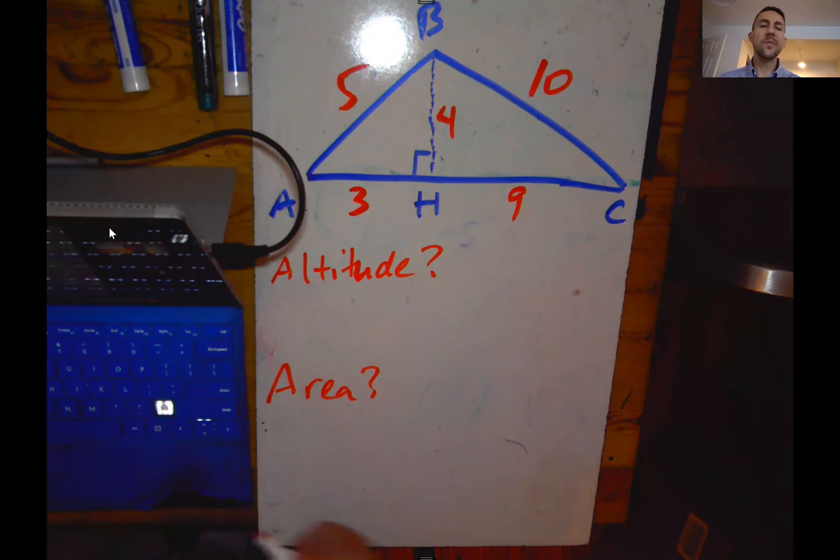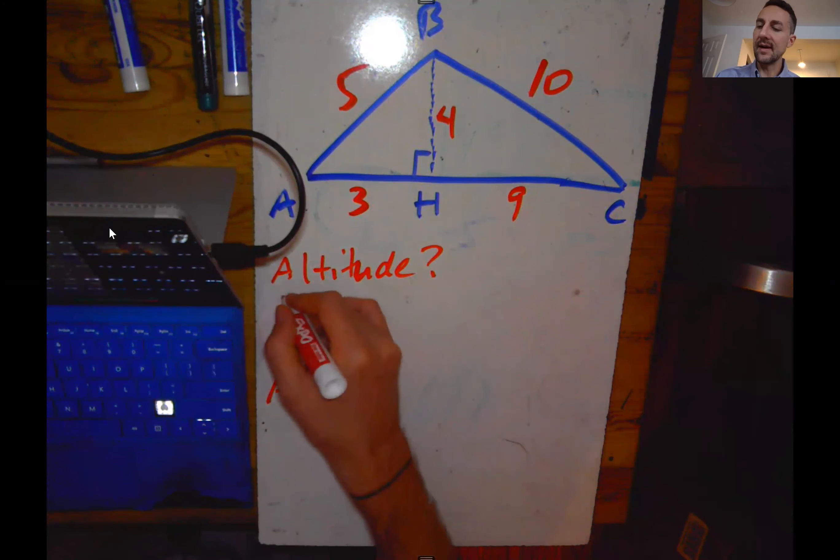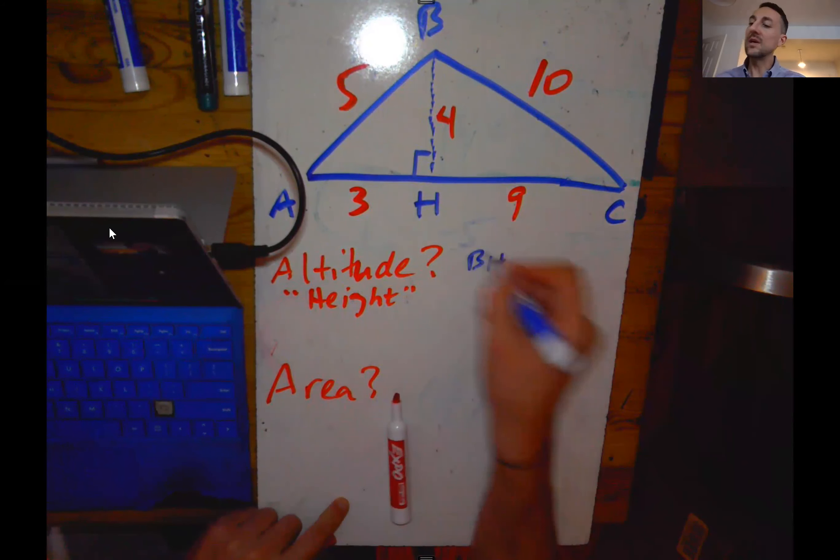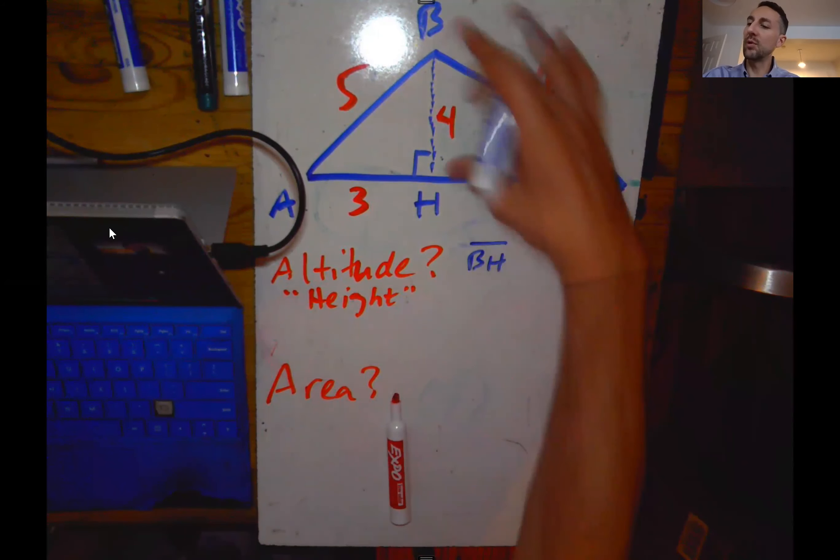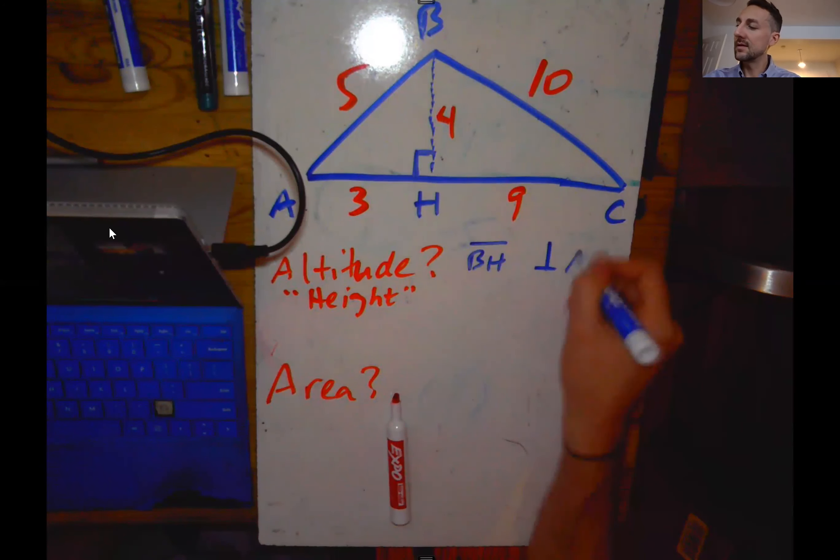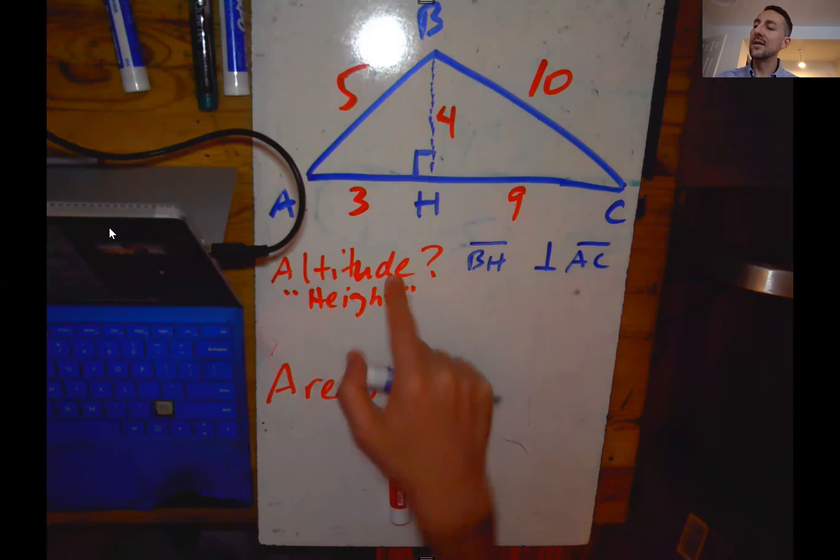So we know that the altitude is the same thing as the height. In this case, the altitude is line segment BH because BH is perpendicular to AC, and we know that our altitude or height must be perpendicular to whatever side we're using as the base.